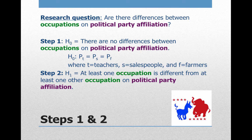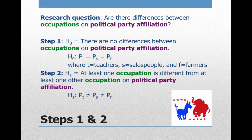Depending on how many groups you have within your IV, that tells you whether to write simply 'there is a difference,' or 'at least one group of your IV is different from at least one other group.' For the step two equation in chi-square analysis, there is no distinction in notation between Greek and Roman symbols. We're simply stating the groups are different: the proportions of each group in our IV are not equal to each other.